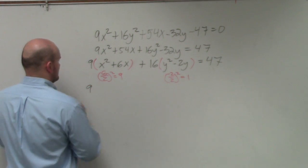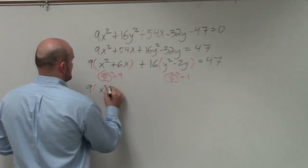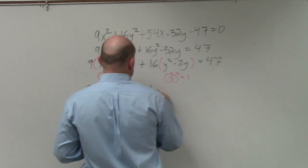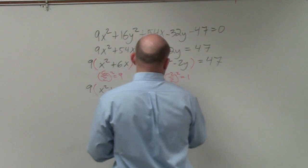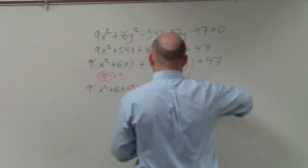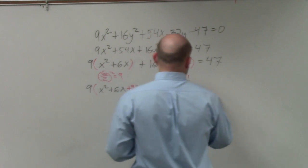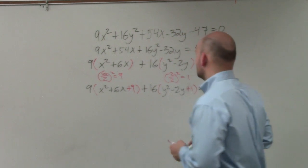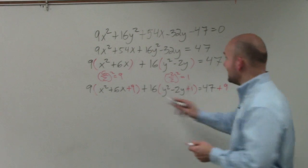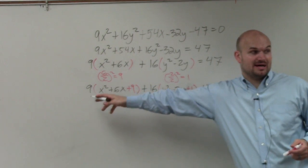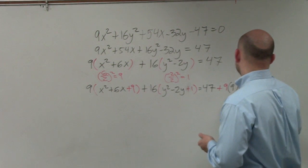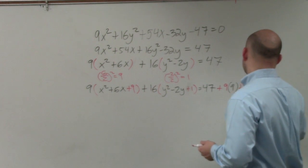So we have 9 times x squared plus 6x plus 9 plus 16 times y squared minus 2y plus 1 equals 47. And then we're going to add 9. And that 9, though, is also being multiplied by 9. And then we have a 16. Add the 1. And that 1 is also being multiplied by a 16.